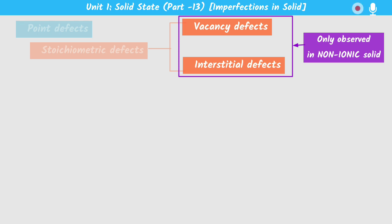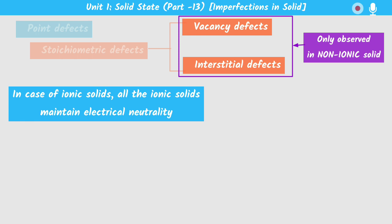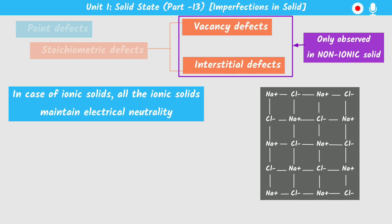These vacancy and interstitial defects can only be observed in non-ionic solids. We cannot observe these two defects in ionic solids because, in ionic solids, the ionic solid always maintains electrical neutrality. For example, in a sodium chloride crystal with 10 sodium positive ions, exactly 10 chloride ions must be present to maintain electrical neutrality.